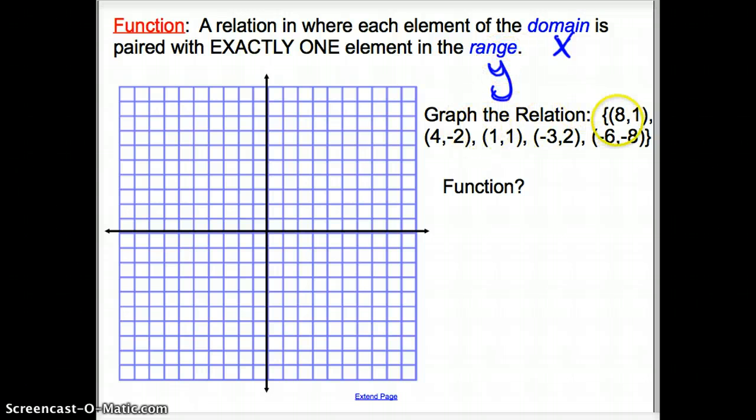So let's graph this relation. Here we're given some coordinate points or ordered pairs. So let's go ahead and put these on the graph. So we have (8, 1). So I go over 8. Up 1. Put a point. I go over 4. And then down 2. Put a point. I go over 1. Up 1. I go over negative 3, because that's my x value. Then I go up 2. Then I go over negative 6. Remember, negatives go to the left. And negatives also go down for my negative 8. And put a point.